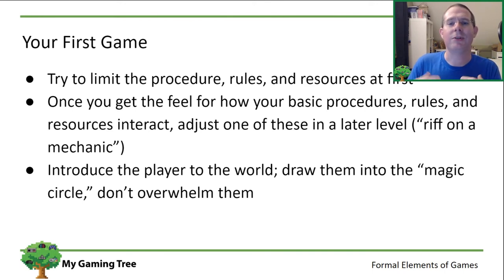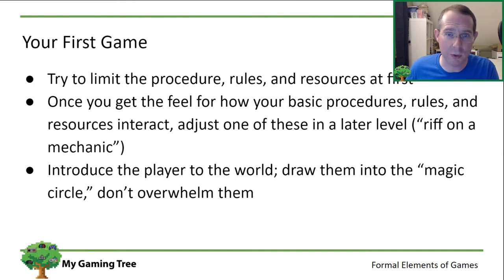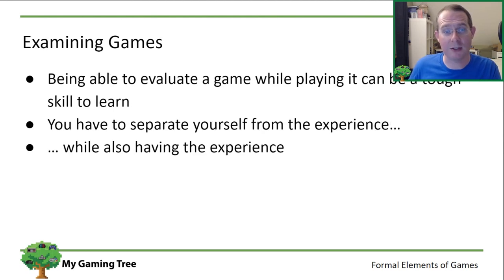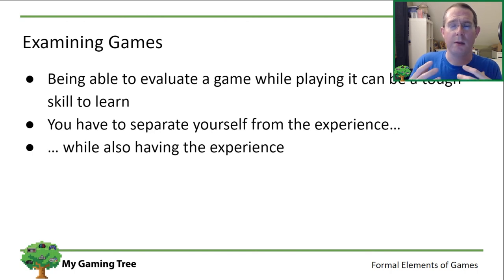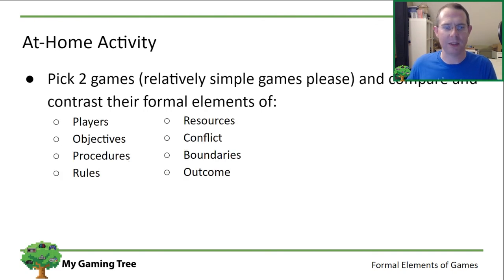Start with your World 1-1: introduce the player to jumping, jumping on top of things, and basic power-ups, then move forward. Now you're in the sky, now on an ice level, now a fire level — you change what things the player can touch, maybe add a button that switches what objects are interactable. Be creative, but make sure that at the tutorial level you introduce the basic procedures, rules, and resources so players understand them before tackling something more complex. Don't throw everything at them at once.